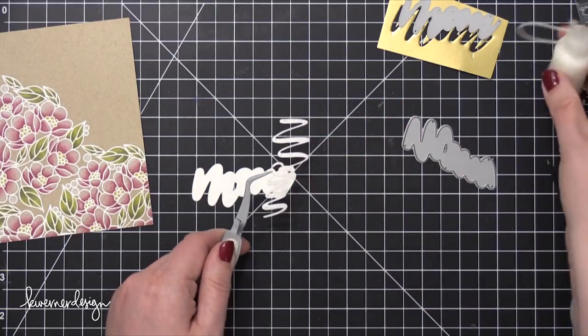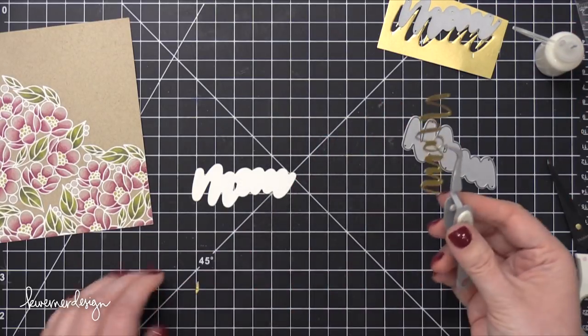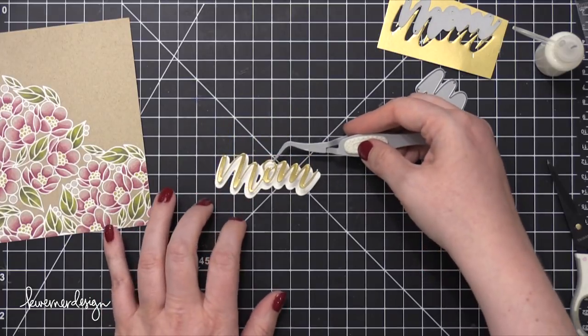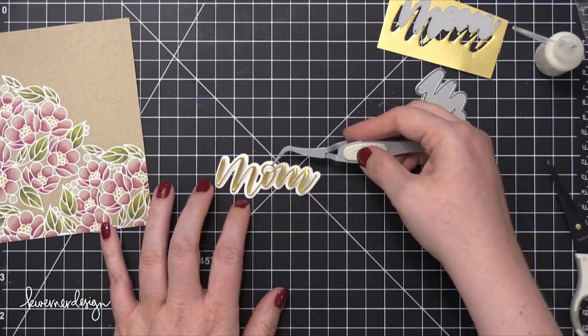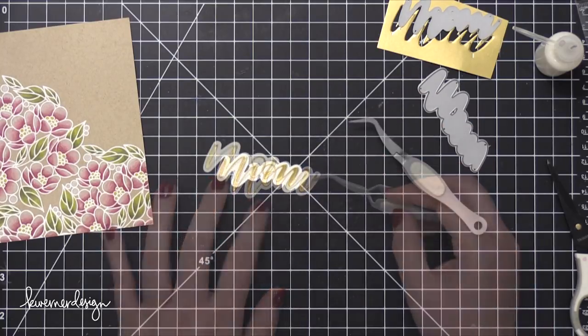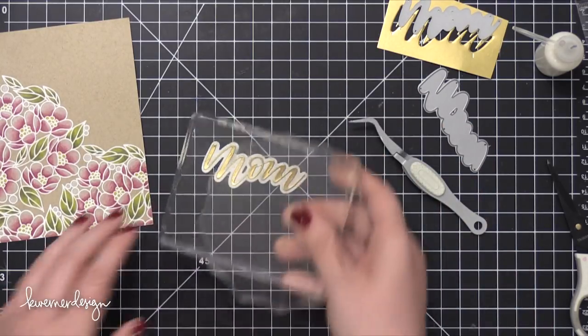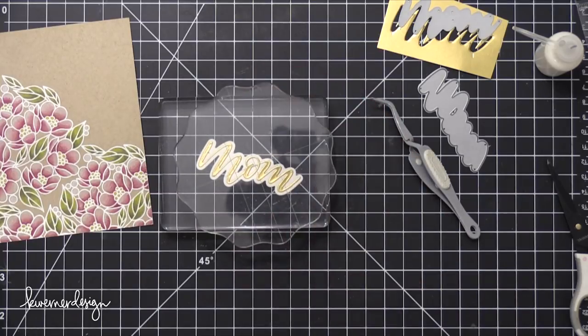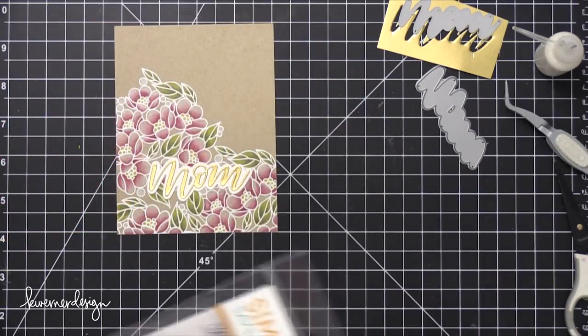I think I forgot to mention earlier that the flowers were stamped on some Neenah Desert Storm 100 pound card stock, just in case you were wondering. I adhered that down with some Ranger Multimedia Matte Adhesive. And I'll just place some acrylic blocks on top to help it dry.